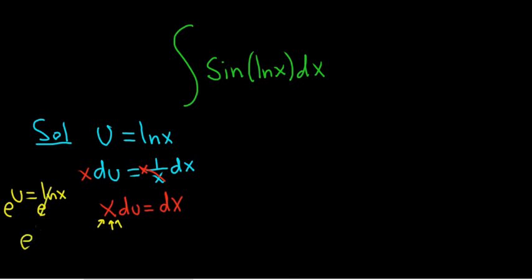These cancel. So you get e to the u equals x. So now what you can do is you can replace this x with e to the u. So that's going to become e to the u du equals dx.